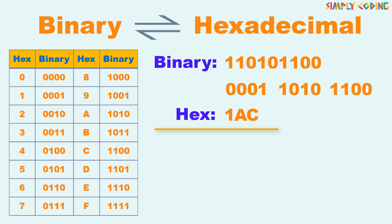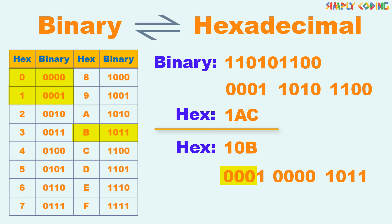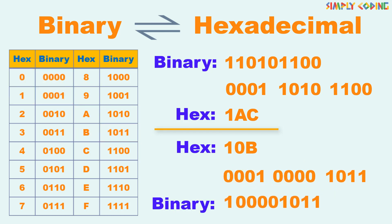We do the reverse of this if you have to convert hexadecimal to binary — we keep the conversion table handy. Let's take the hexadecimal number 10B. For each hex number, we take its equivalent 4-digit binary number and concatenate those numbers. We can ignore the extra zeros on the left, and this gives us the answer in binary, which is 100001011.